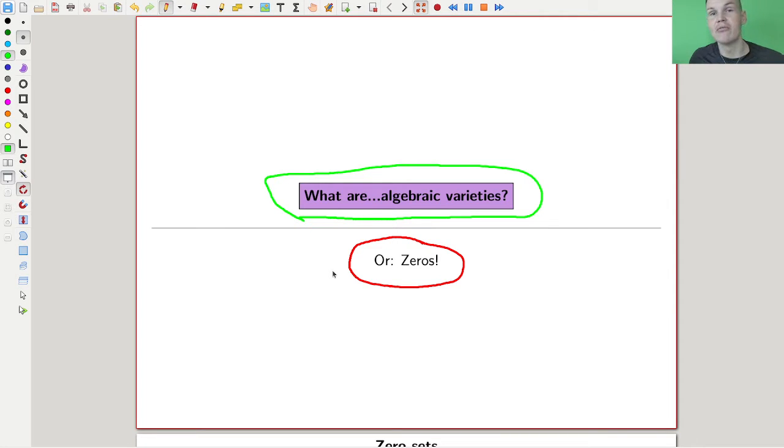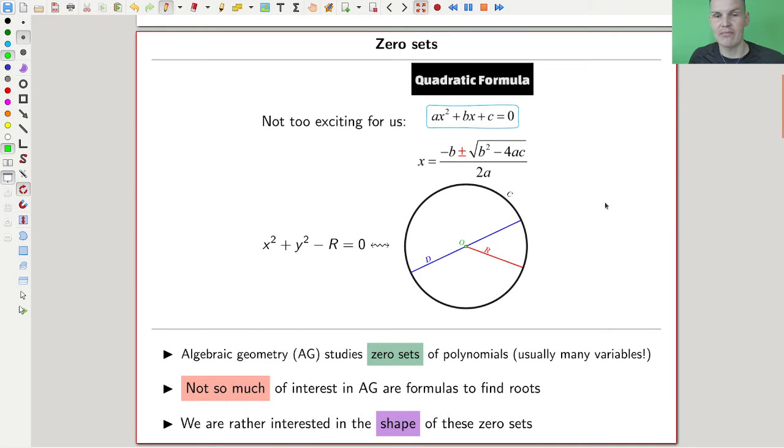Everything else is kind of motivated to in some sense generalize it, understand it, or whatever, but this is the main definition. If you like this definition and think that's something reasonable you would like to study, then probably algebraic geometry might be for you.